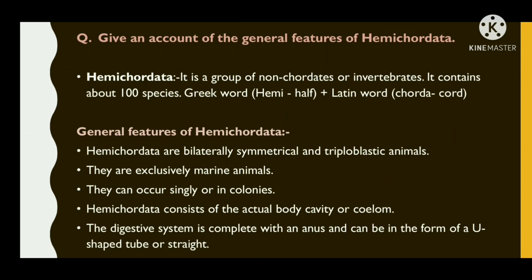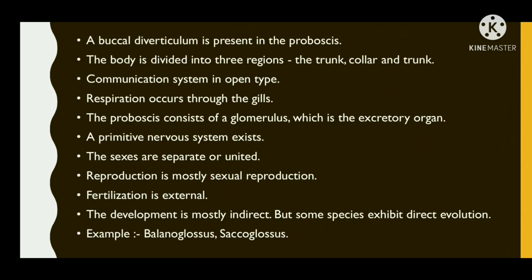Hemichordata consists of an actual body cavity or coelom. The digestive system is complete with an anus and can be in the form of a U-shaped tube or straight. A buccal diverticulum is present in the proboscis. The body is divided into three regions: trunk, collar, and proboscis. The circulatory system is of open type.